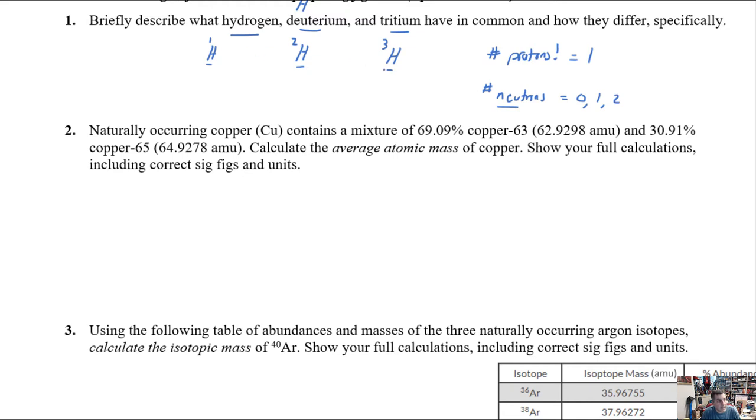The way they differ is the number of neutrons, and that's really important. Neutrons have no charge because they're neutral. And in this case, it could be equal to 0, 1, or 2, depending on which isotope you have. So hydrogen 1 is just normal, typical hydrogen. Hydrogen 2 is deuterium, and hydrogen 3 is known as tritium. Specifically, they differ in the number of neutrons, 0, 1, and 2, and specifically, they are similar or have in common a single proton in every case.